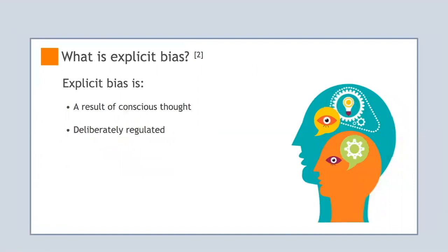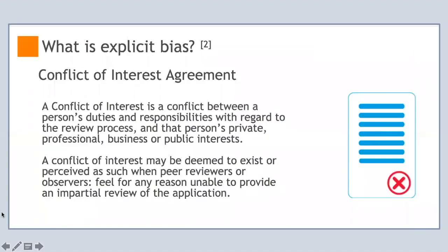Explicit bias is a result of conscious thought and can be deliberately regulated. People are more motivated to control their biases if there are social norms in place that dictate prejudice is not socially acceptable. Every peer reviewer is asked to sign a conflict of interest agreement which states that a conflict exists if a reviewer feels that for any reason he or she is unable to provide an impartial review of the document in question. Explicit bias is an example of being unable to provide an impartial review and is therefore a conflict of interest.